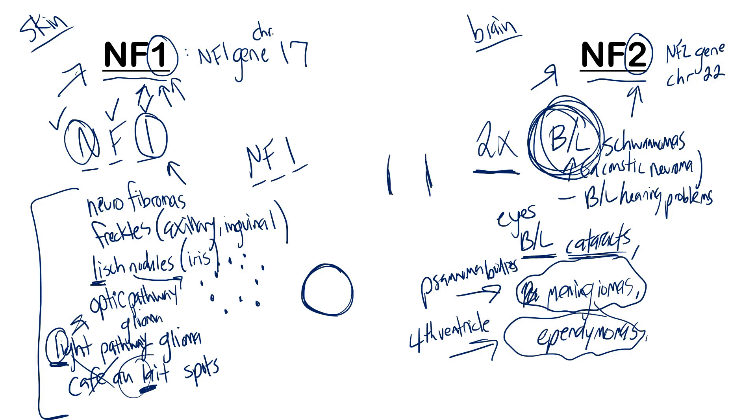For ependymoma, remember it's known to block the fourth ventricle. It loves to sit in the fourth ventricle. When you go through the lateral ventricles, then the third and fourth in the brain, if you have cerebrospinal fluid flowing through here and you're blocking from the fourth, that means the lateral, third, and fourth will be enlarged because CSF is getting backed up into these areas. They can describe a situation of increased intracranial pressure and enlarged lateral ventricles and third ventricle, instead of just telling you the patient has meningiomas or ependymomas.